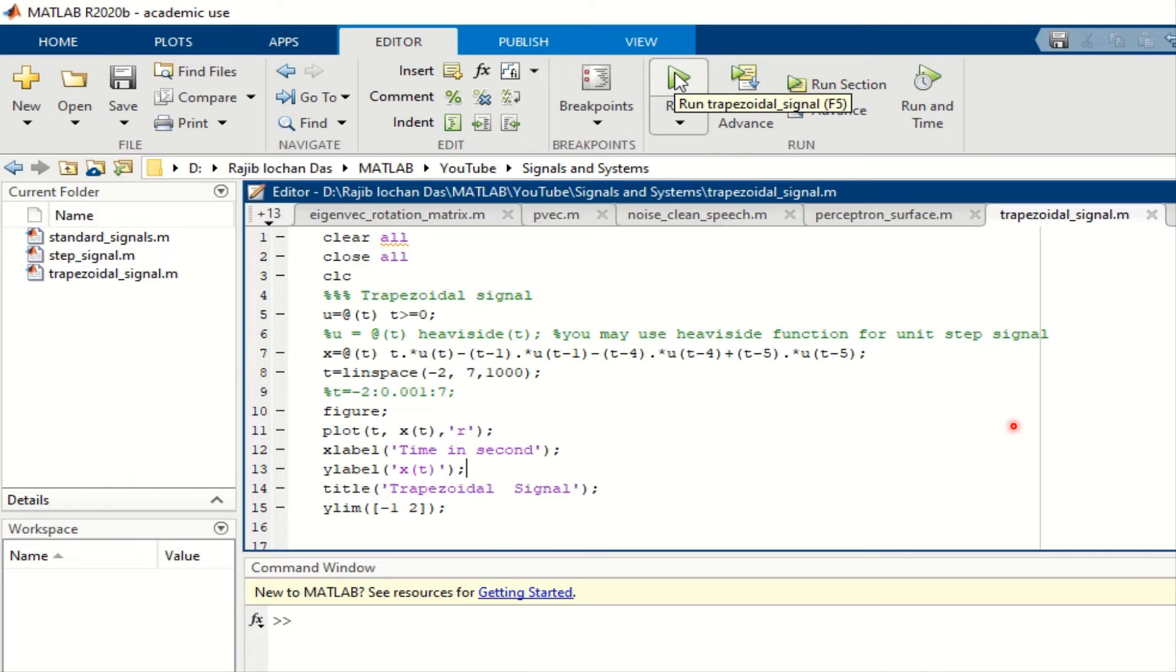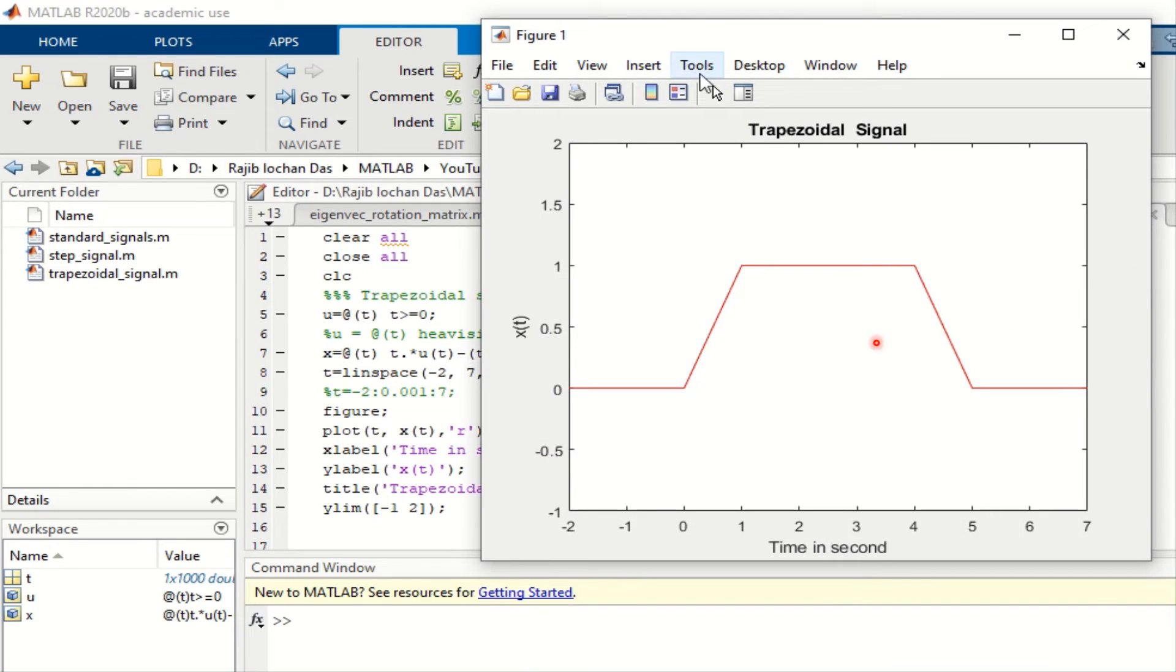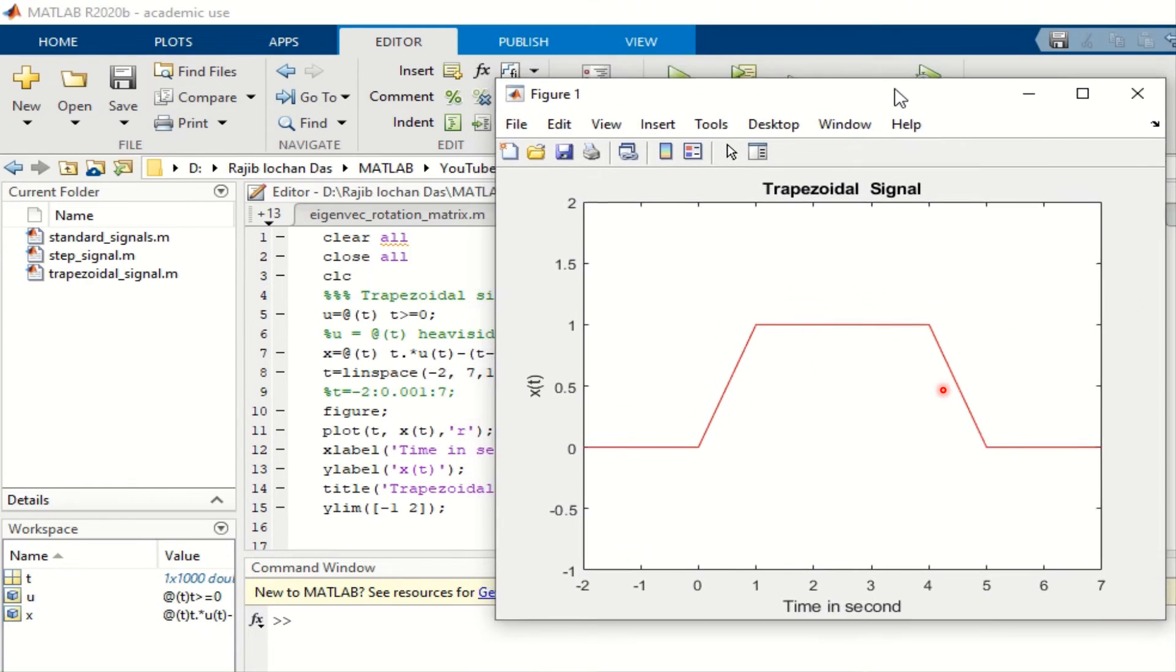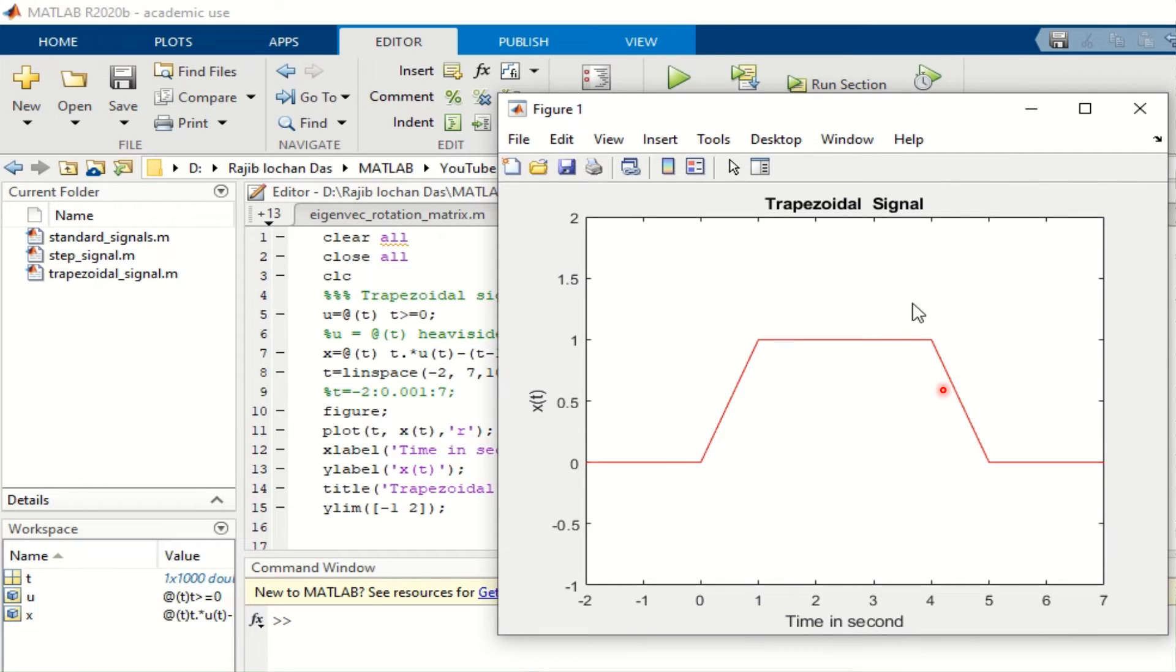So you will see here the workspace is clean and there is nothing in command window. Now if you run it you will get this trapezoidal signal easily. So it will start from zero, rise to one, then after four, then downward. So this kind of pattern you will get it quickly.